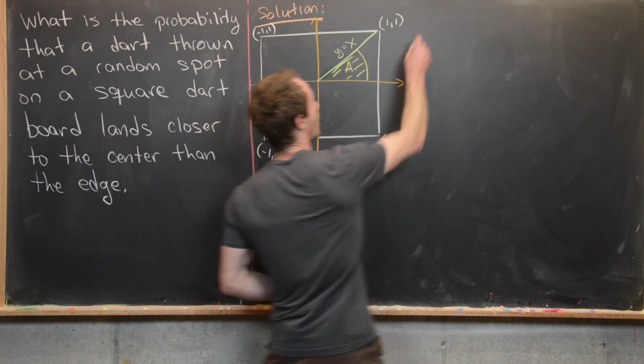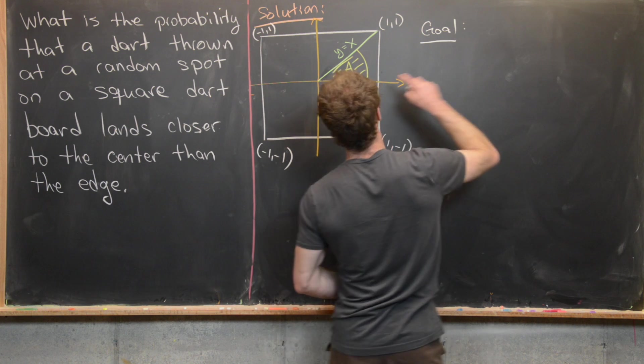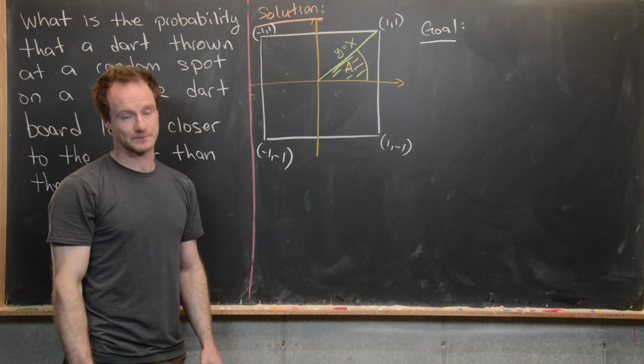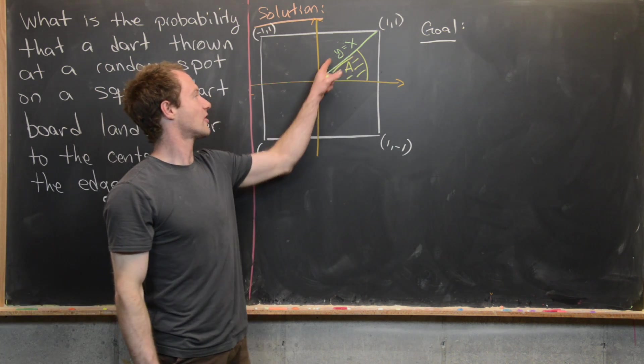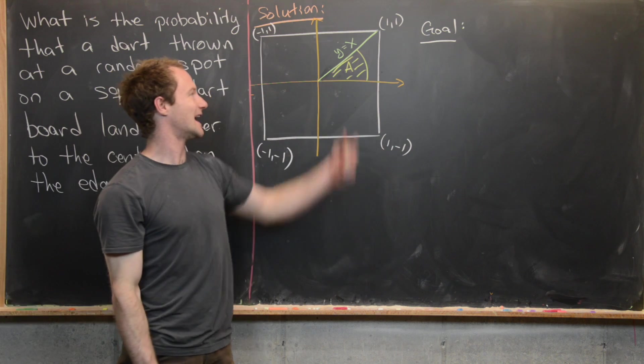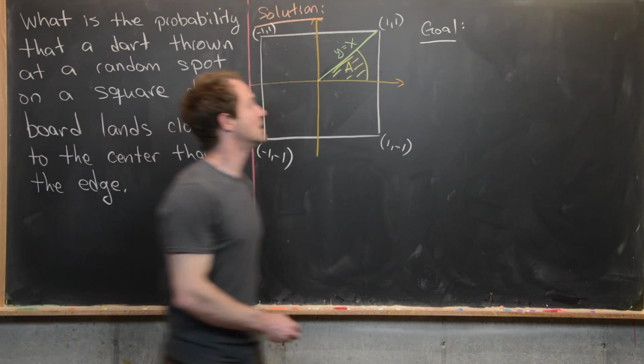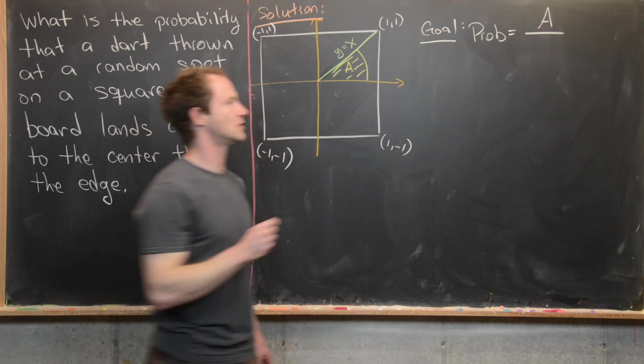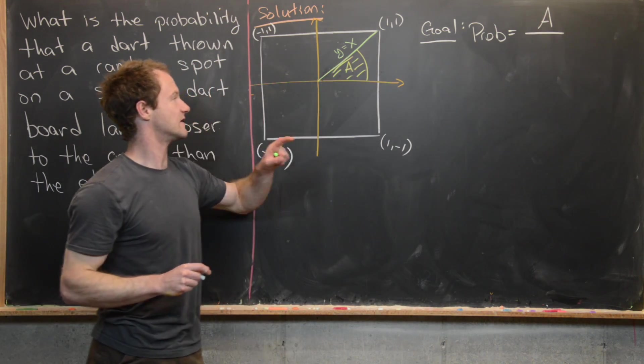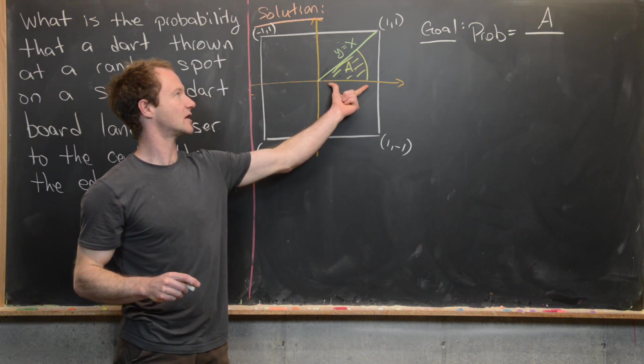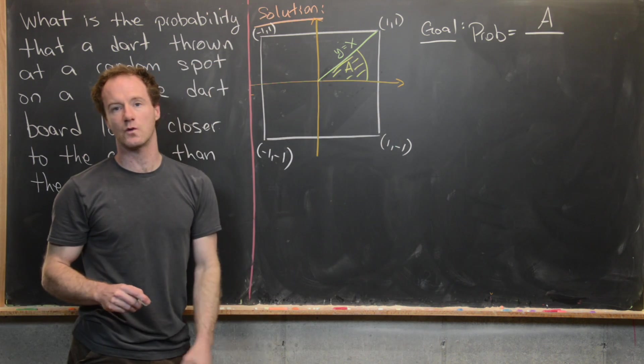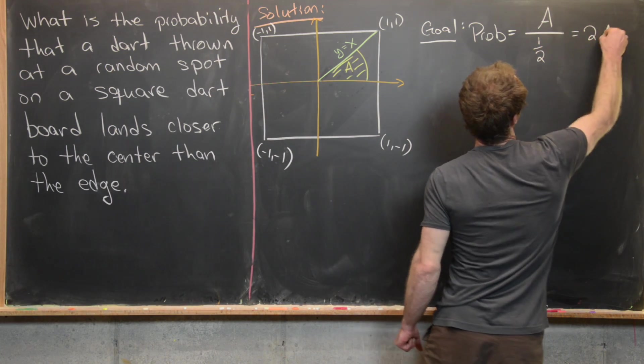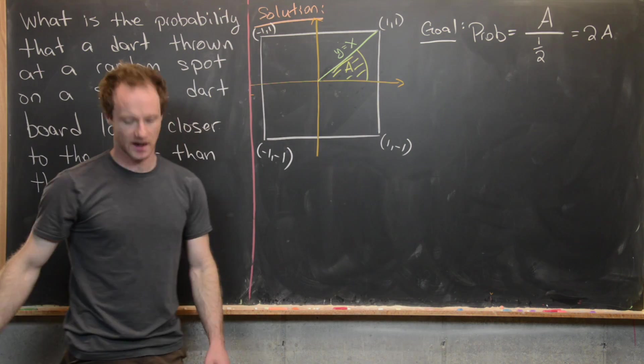And notice that our goal will be to determine the probability that the dart will land closer to the origin than it does the edge will be exactly the area of this yellow shaded region divided by the area of the entire triangle. But that makes our goal, this probability, equal to the area of that yellow shaded region divided by the area of this entire triangle. But notice that the base of this triangle is one and the height of this triangle is also one which makes the area one half. But that means the probability will be exactly twice this area.